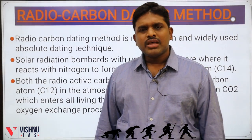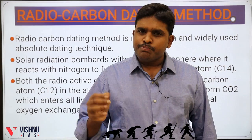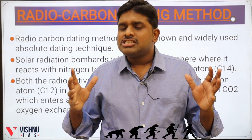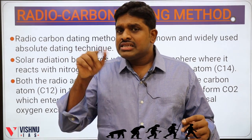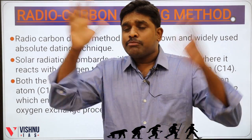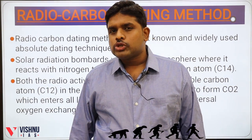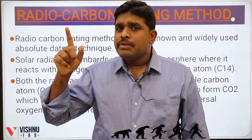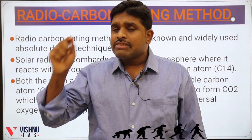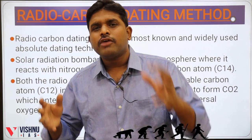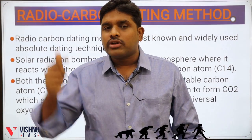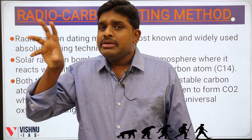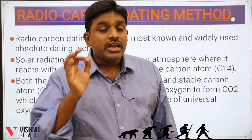Radiocarbon dating method is the most famous, most authentic, and most popular absolute dating method. Carbon C6¹² has mass number 12 and atomic number 6, and carbon is present everywhere in the atmosphere. Similarly, nitrogen is also present. When nitrogen — which has 7 protons and 7 neutrons — is bombarded by solar radiation, it changes into 6 protons and 8 neutrons, which is atomic number 6, meaning carbon. So it changes into C6¹⁴, which is called radioactive carbon.